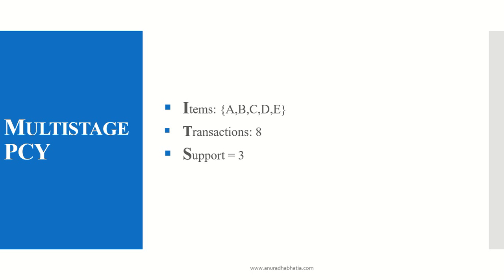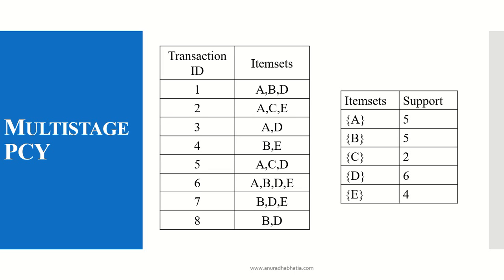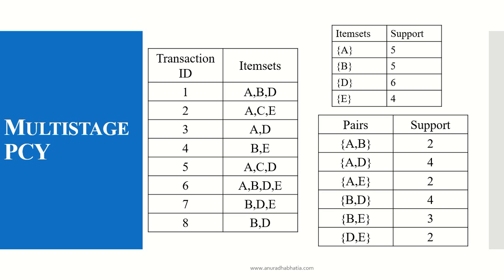Let's take an example. Items are a, b, c, d, and e, with 8 transactions and a minimum support of 3. From the transaction ID and item sets, we find the support for candidate 1: a appears 5 times, b appears 5 times, c appears 5 times, d appears 6 times, and e appears 4 times. Since our support is 3, c with a count of 2 is rejected, giving us a new list: a, b, d, and e.